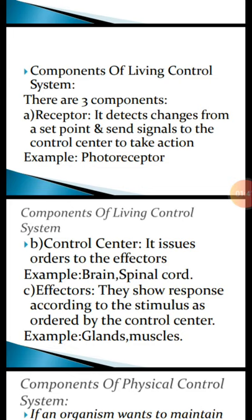The second component is the control center. Its function is to issue orders to the effectors. Its examples are the brain and spinal cord, which send signals.